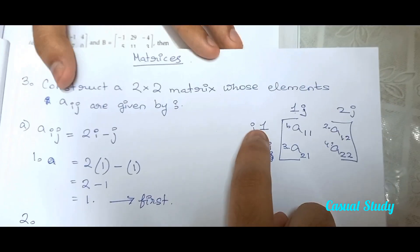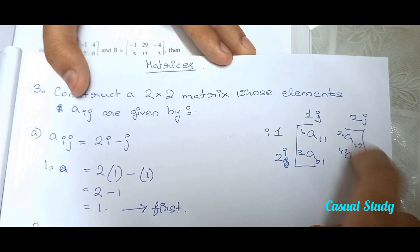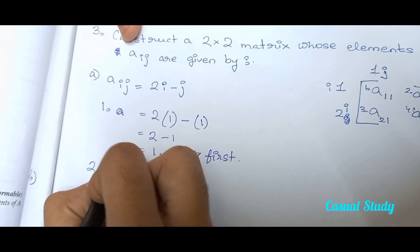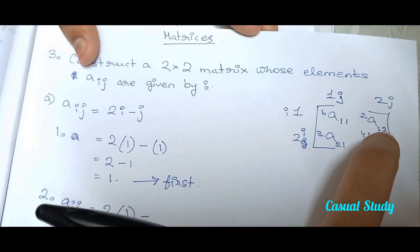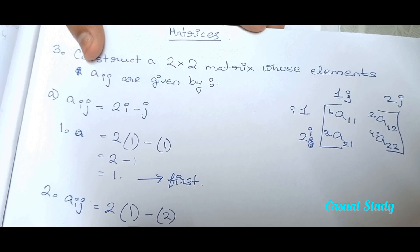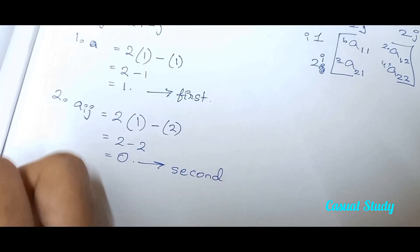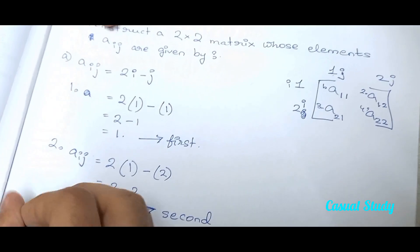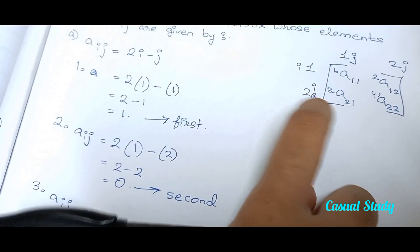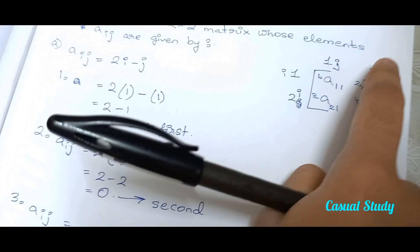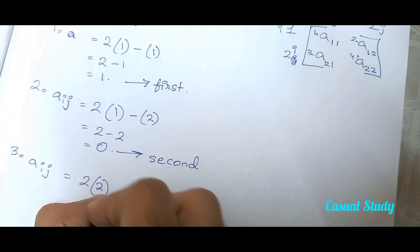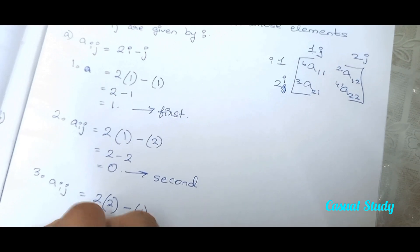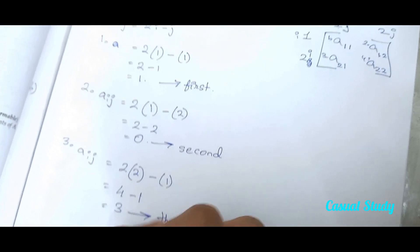Our second element is going to have row 1, that is i, and column 2, that is j. So this element is going to have i's value as 1, so 2 times 1, minus j's value which is 2. So 2 minus 2 equals 0. Second element is 0. The third element is going to have row 2, that is i is 2, and the column value j is 1. So 2 into 2 minus 1 equals 4 minus 1, which is 3. Third element is 3.